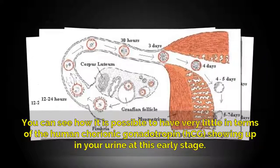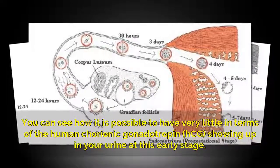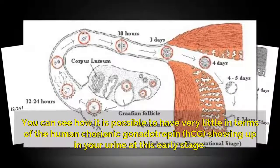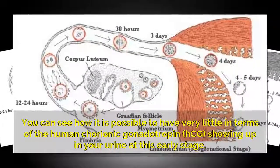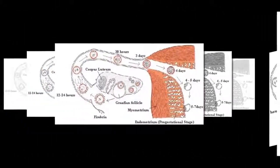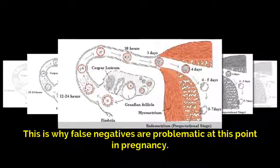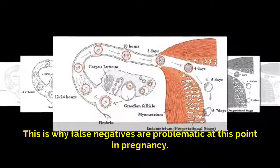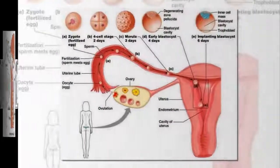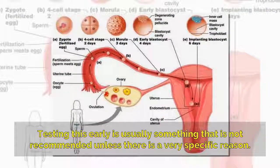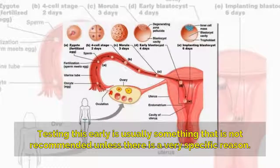You can see how it is possible to have very little in terms of the human chorionic gonadotropin, HCG, showing up in your urine at this early stage. This is why false negatives are problematic at this point in pregnancy. Testing this early is usually something that is not recommended unless there is a very specific reason.